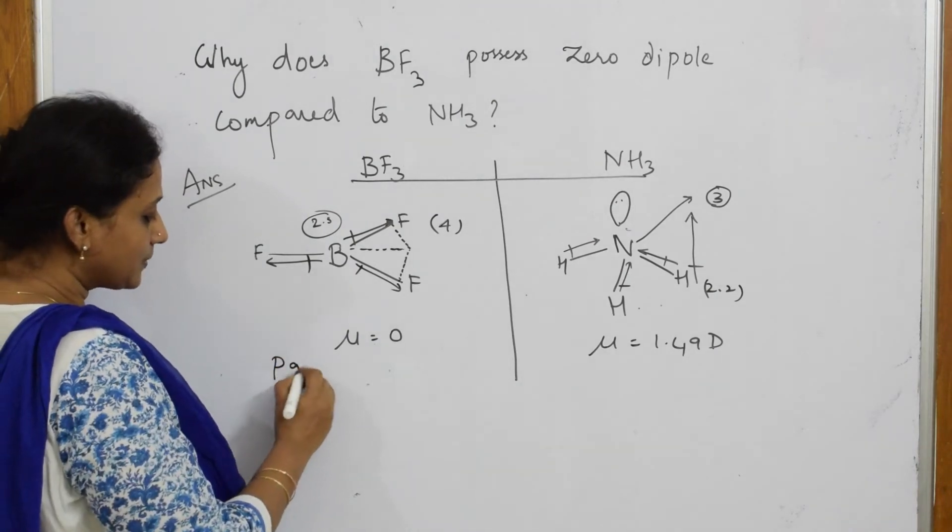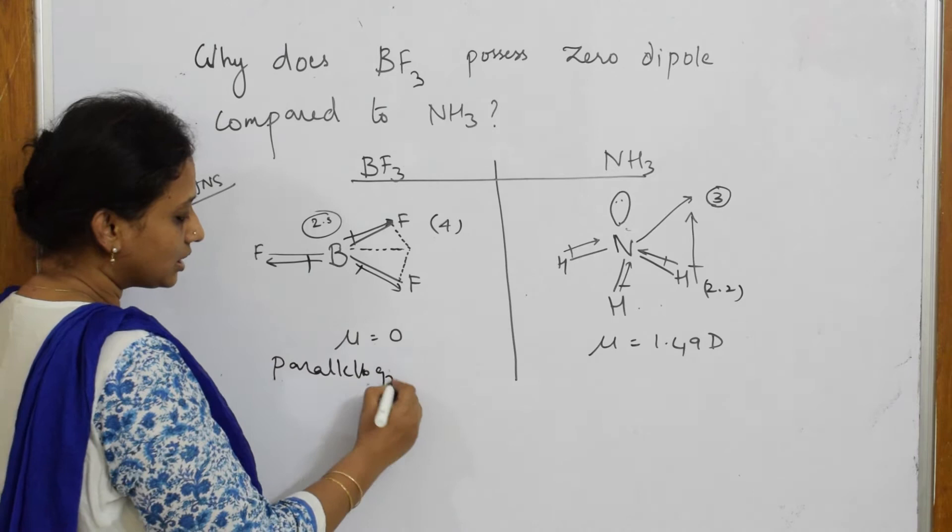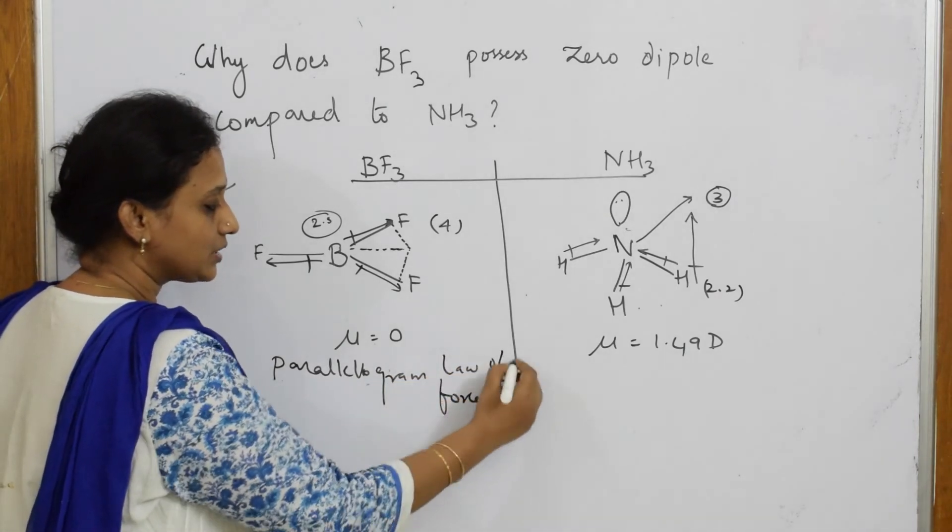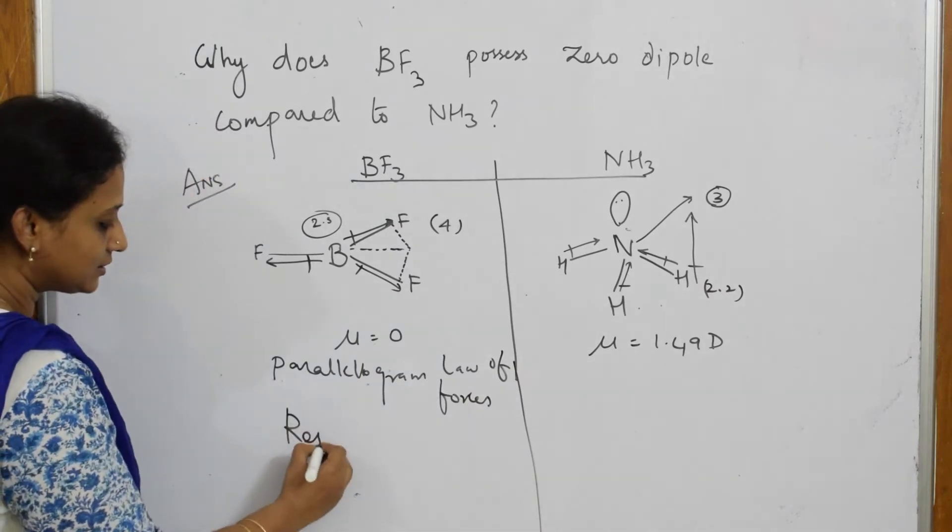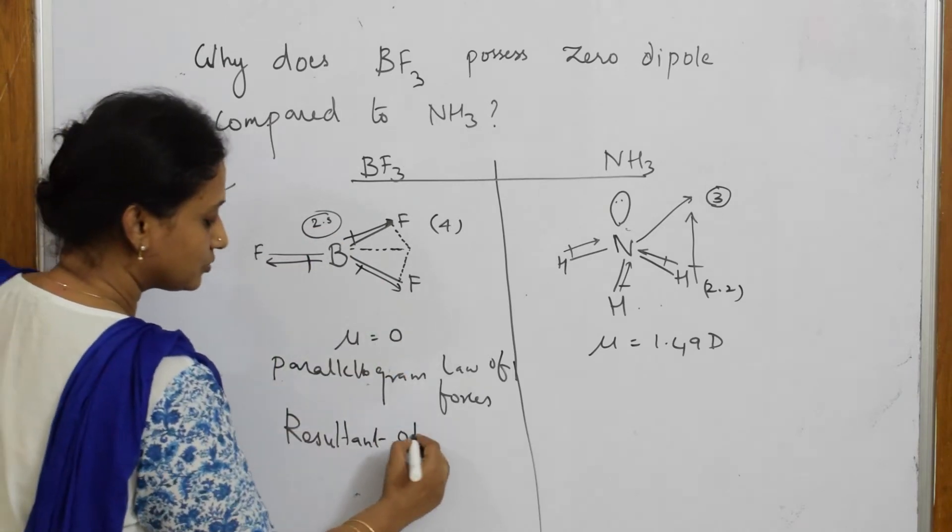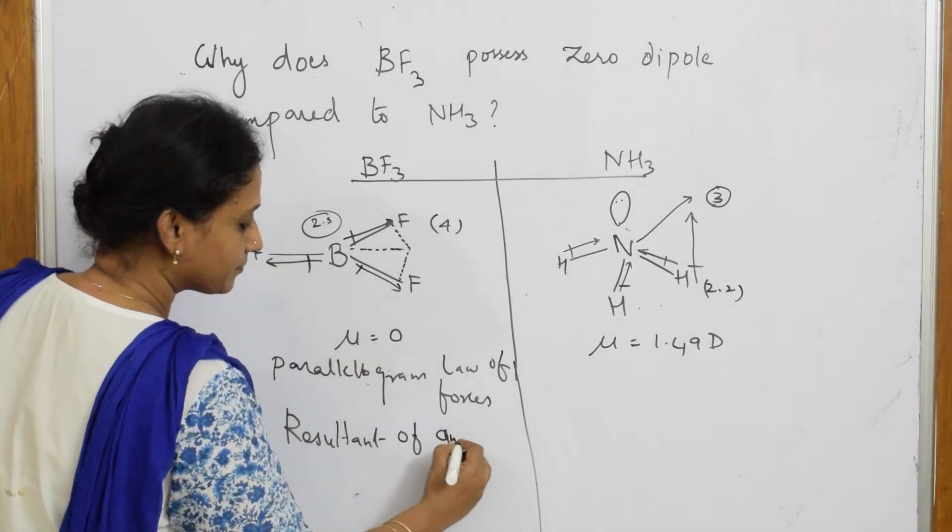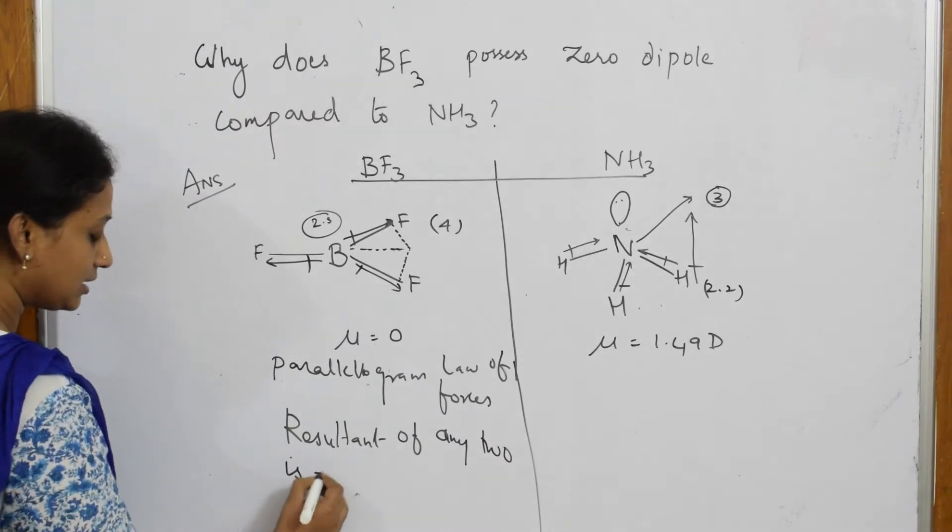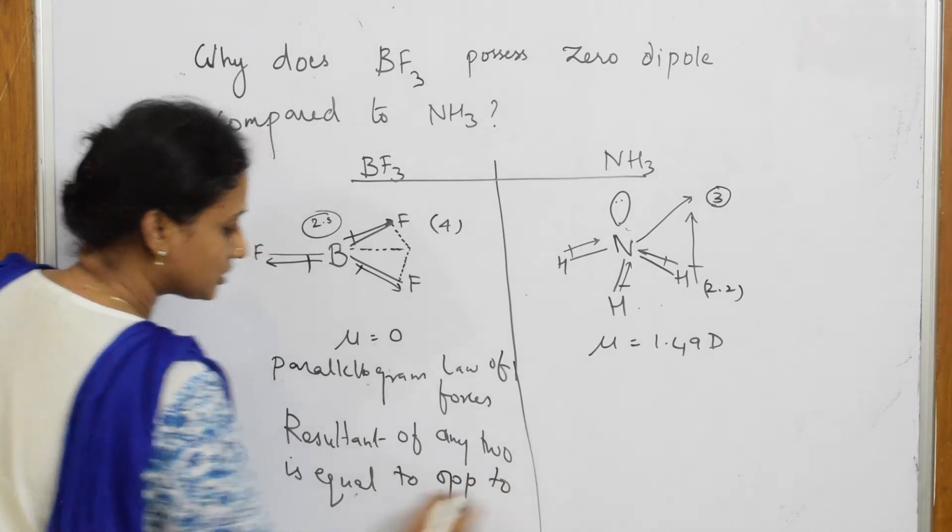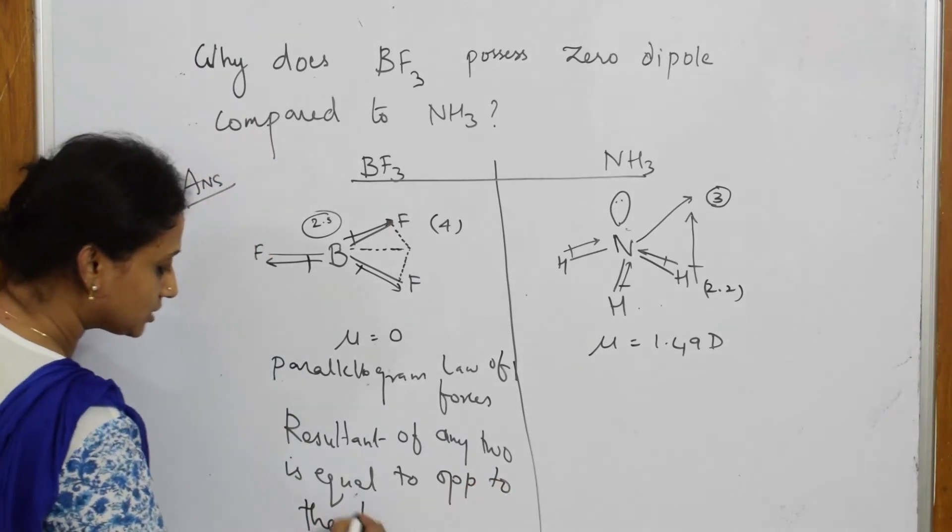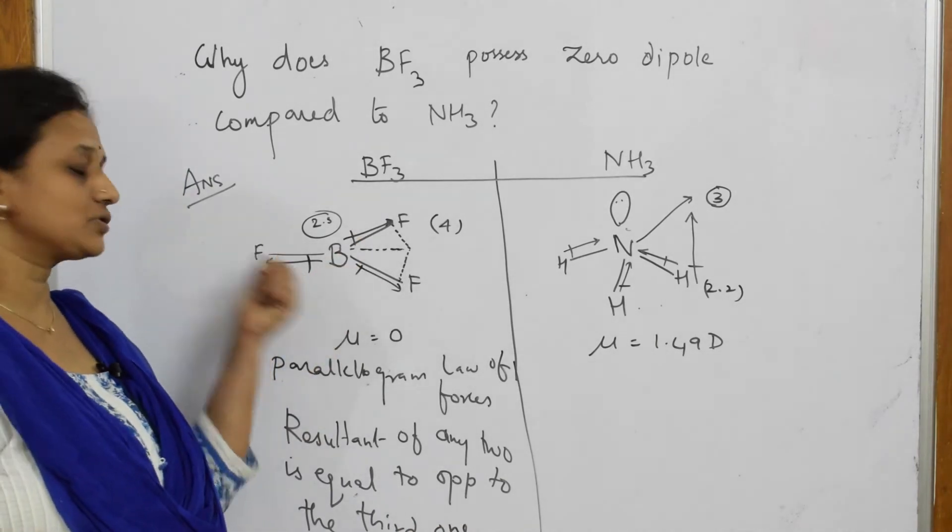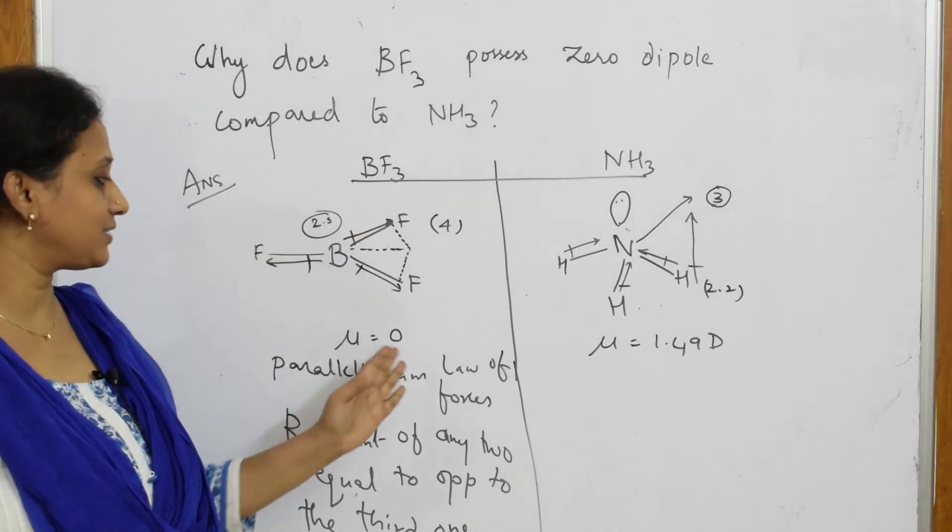So according to parallelogram law of forces, what should you write? The resultant of any two is equal and opposite to the third one, so this gets cancelled and finally mu becomes zero, yes?